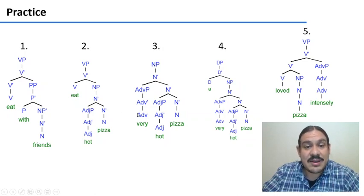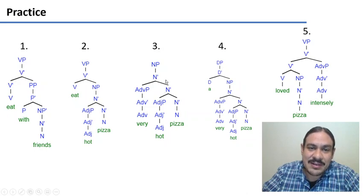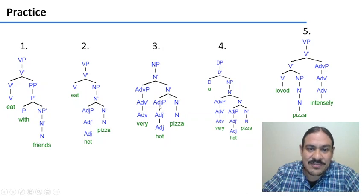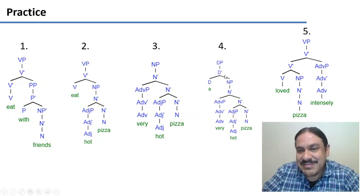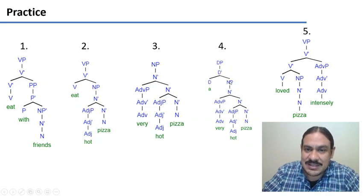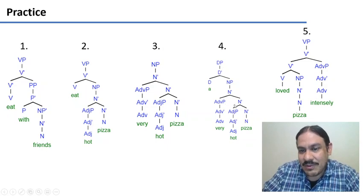In number three, we have 'very hot pizza.' Here we projected several X-bar nodes for the adjuncts — one for the adverb 'very,' one for the adjective 'hot,' then an X-bar for a potential complement, and then the head 'pizza.' For 'a very hot pizza,' it is exactly the same, except that we also have the determiner phrase 'a,' which needs as its complement the noun that it is determining — 'a very hot pizza.'